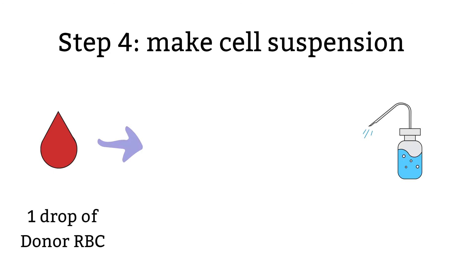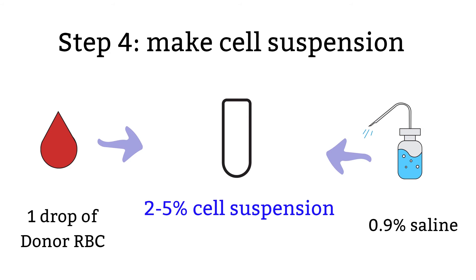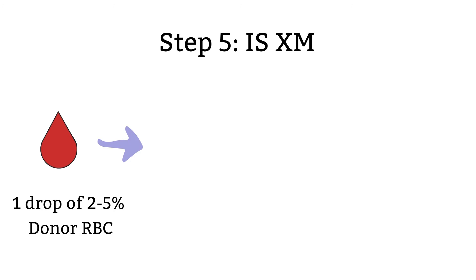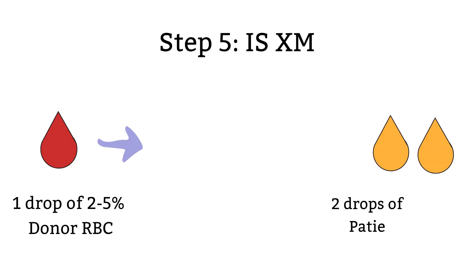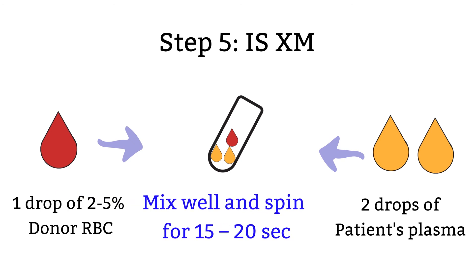Step 4: Make a 2 to 5% donor red blood cell suspension. This can be made by placing one drop of 0.9% saline into a labeled tube and adding enough cells to make a 2 to 5% cell suspension. Step 5: Place 2 drops of patient plasma in a labeled tube, add 1 drop of the 2 to 5% donor red blood cell suspension, mix well, and centrifuge for 15 to 20 seconds.